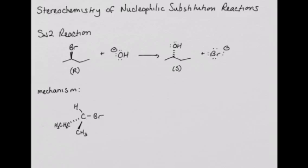I have redrawn the R-2-bromobutane so that we can see the reactive center and its chirality. The nucleophile, the hydroxide ion, has to attack the reactive center opposite from the leaving group. So in this example, the hydroxide will attack from the left as the leaving group leaves on the right.